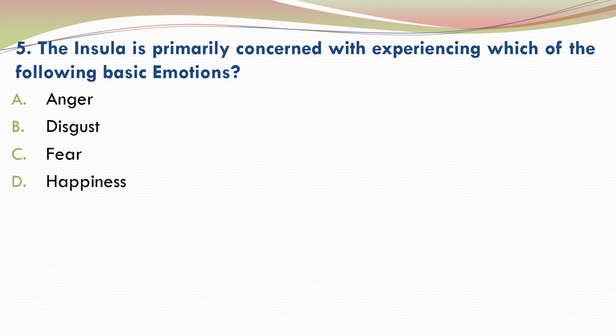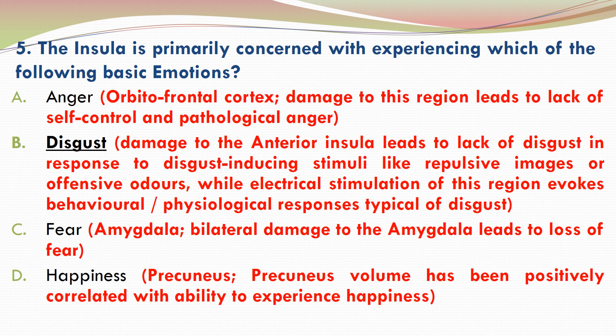The correct answer is B — disgust. The insula is primarily concerned with experiencing disgust. Studies have shown that damage to the anterior insula leads to lack of disgust in response to disgust-inducing stimuli like repulsive images or offensive odors, while electrical stimulation of the anterior insula evokes behavioral and physiological responses that are typical of disgust.